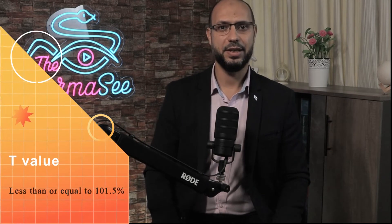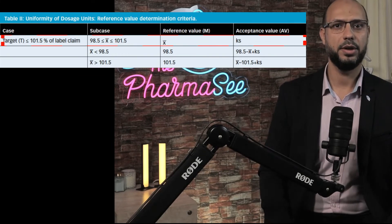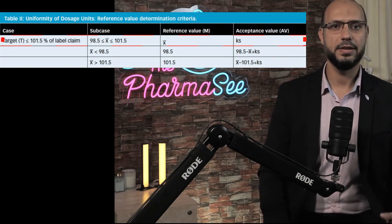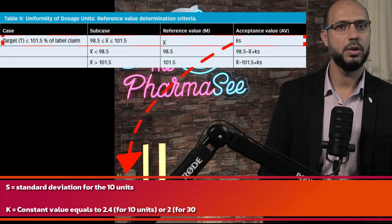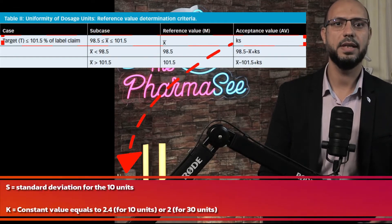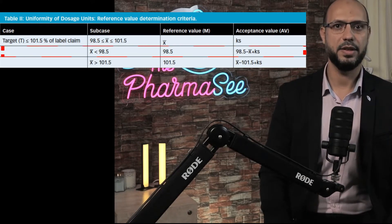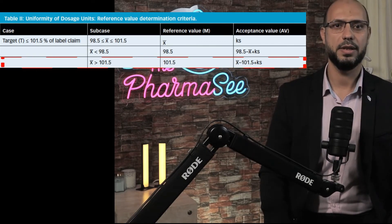There are two cases for the T value that affect M value calculation. Case 1: if T is less than or equal to 101.5%, M is based on X-bar. If X-bar is between 98.5% and 101.5%, M equals X-bar and AV simplifies to k×S. If X-bar is less than 98.5%, M is set to 98.5% and AV equals (98.5% − X-bar) + k×S. If X-bar exceeds 101.5%, M is capped at 101.5% and AV equals (X-bar − 101.5%) + k×S. Here, k equals 2.4 for 10 units or 2 for 30 units.